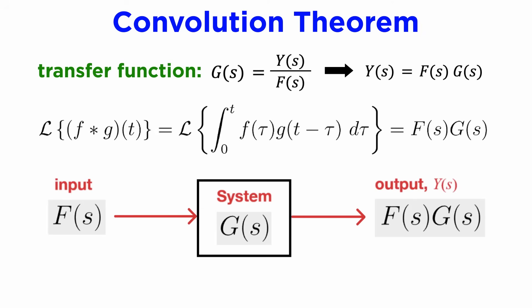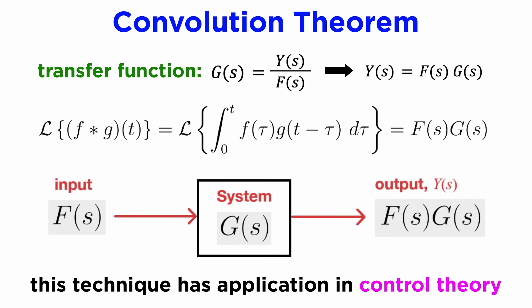The convolution theorem gives us a new way to think of linear systems as a whole, as it tells us that the transfer function G(s) contains all the information we need to know about it. If we do all of our analysis in the s domain, finding a system output is as easy as simple multiplication, and we don't have to worry about solving any differential equations at all. This technique is widespread in a field of applied math called control theory, where even the most complicated systems can be analyzed without ever even thinking about the time domain.